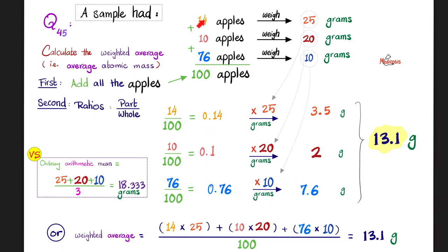You can also calculate it as: (14 × 25 + 10 × 20 + 76 × 10) divided by 100, and you'll get the same answer — 13.1 grams. How is the weighted mean different from the ordinary arithmetic mean? For the ordinary mean: (25 + 20 + 10) ÷ 3 = 18.333. That's kind of in the middle because each apple is contributing equally.